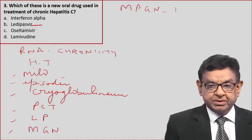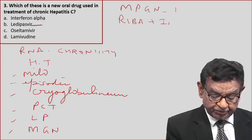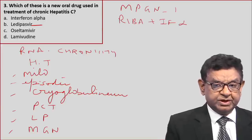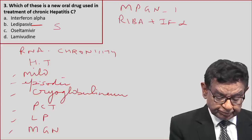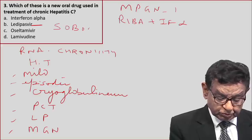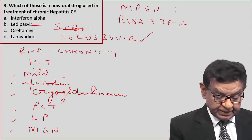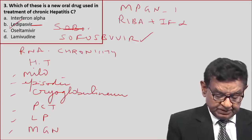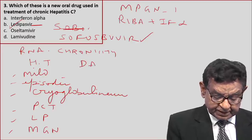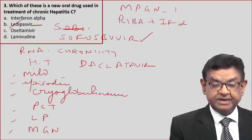Traditionally we have been treating hepatitis C with ribavirin and interferon alpha, but recently new drugs have been introduced — sofosbuvir and ledipasvir are the two most commonly used drugs. Daclatasvir is also used.